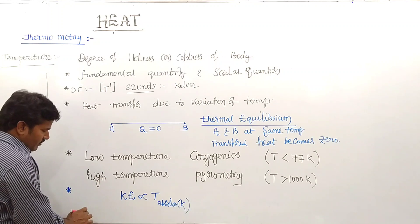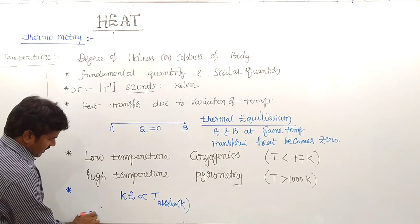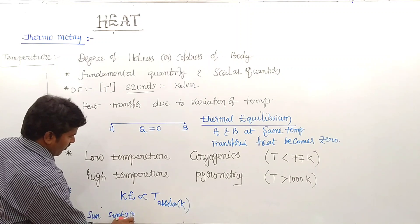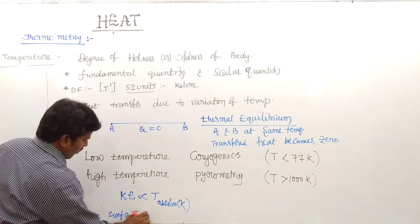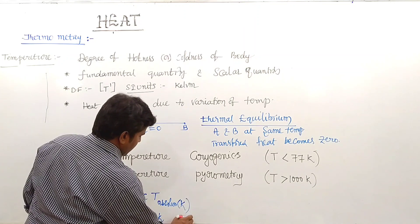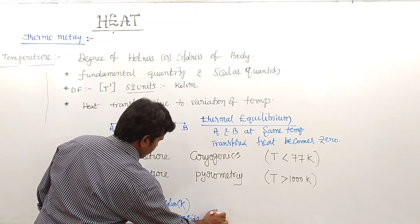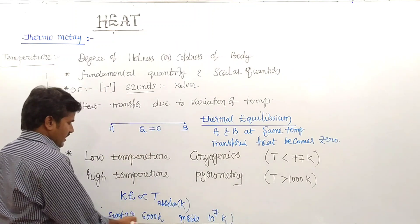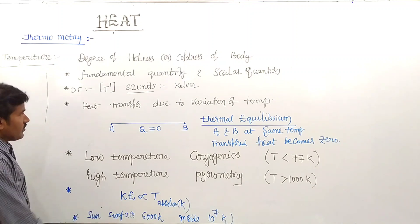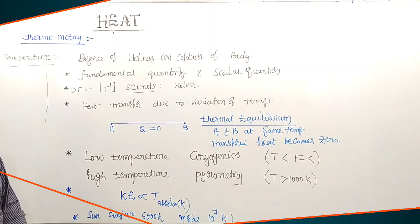The temperature of the sun's surface is around 6000 Kelvin, while the temperature inside the sun is approximately 10⁷ Kelvin. This illustrates the concept of temperature in thermometry.